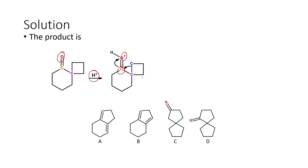But we have a strained system. Whenever we have a strained system, that strained system is ready to open up so that the strain is relieved. Similarly, when there is an electron requirement in a nearby place, one of the bonds can give its bonded electrons to that particular place. This is how ring enlargement reactions happen very easily whenever we have strained small cyclic ring systems — C3, C4 kind of cases — they are very prone to ring expansion.